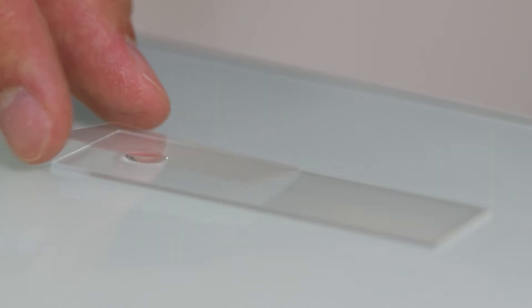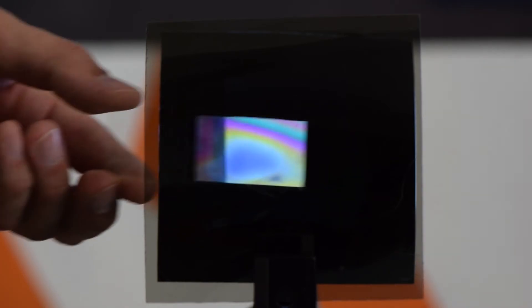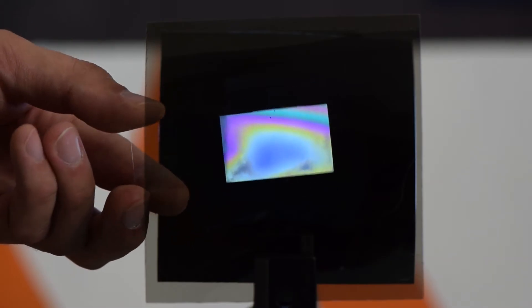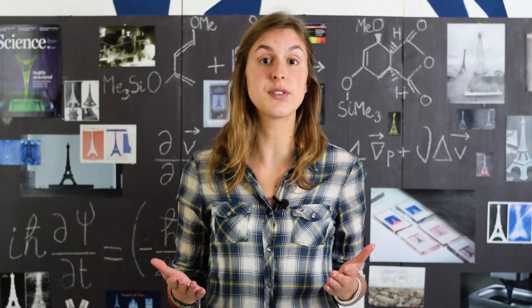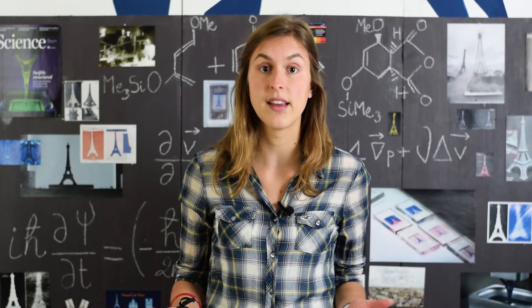Now, let's put a drop of a regular liquid such as water on a microscope slide, then place it between the two crossed polarizers. Everything is dark, and it's not very interesting. But if we do the same thing with a drop of a liquid crystal, light is transmitted. We've just proved that liquid crystals can alter the polarization of light.